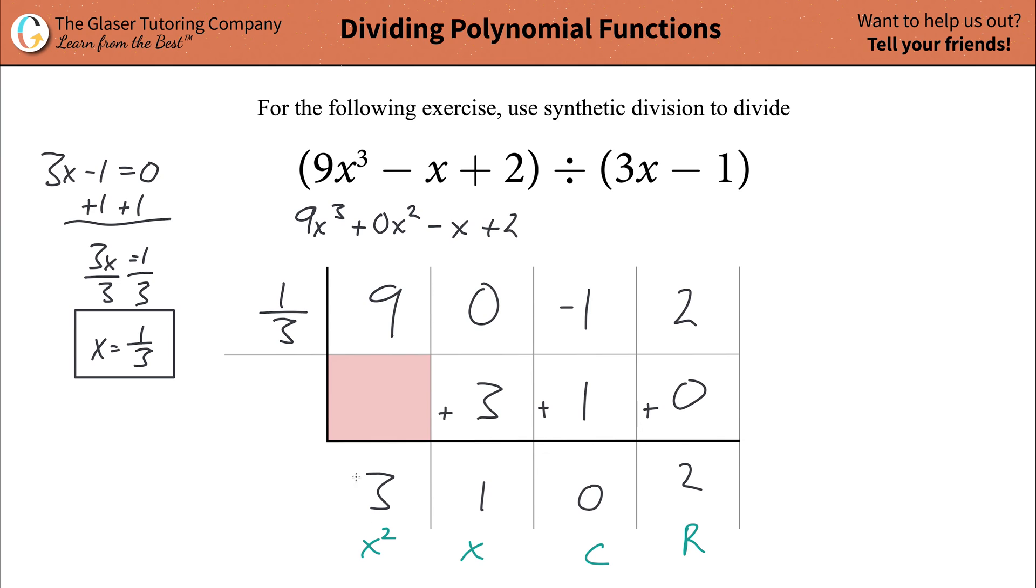Now you can properly write out your quotient. So you have 3x squared plus 1x, or just plus x, plus 0, so you can write that in. And then plus now your remainder, whatever this is, whatever the value is, you're going to plug it in, 2, and then over your divisor, 3x, 3x minus 1.